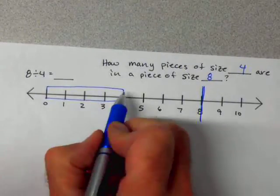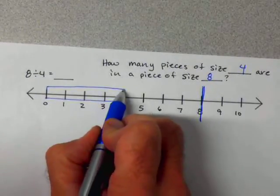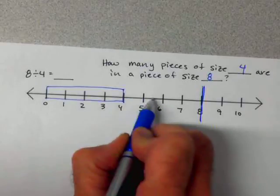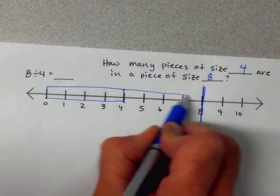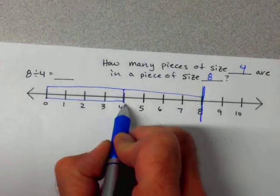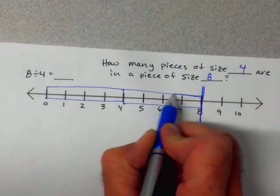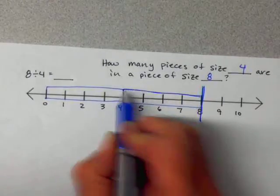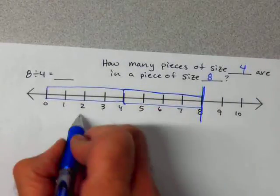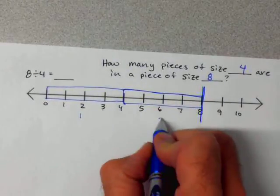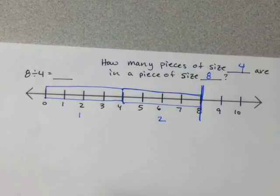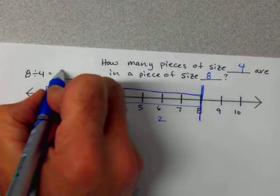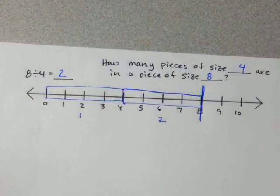That's obvious. And the other one: 1, 2, 3, 4 — there's a piece there, and it goes all the way to the end. So I can find 1, 2 pieces of size 4 inside a piece of size 8. That's pretty straightforward.